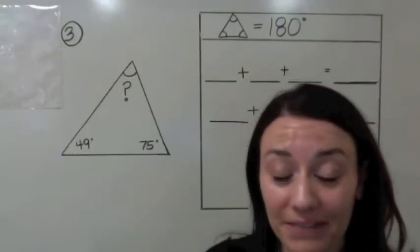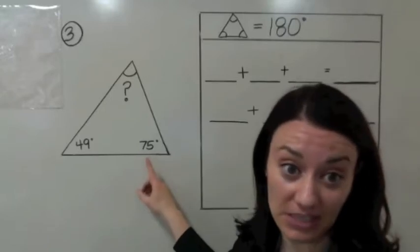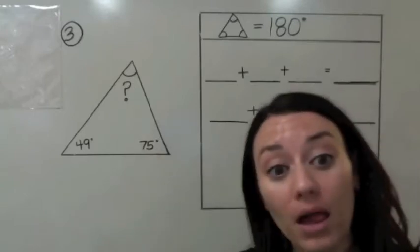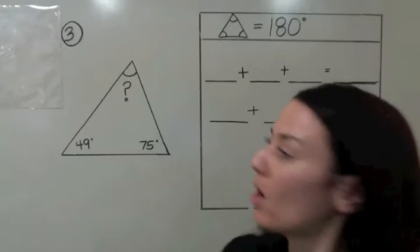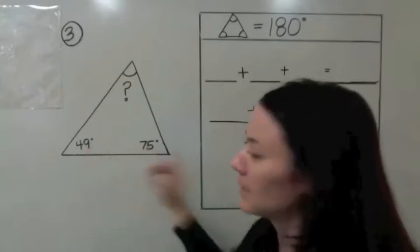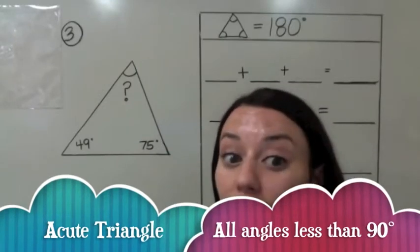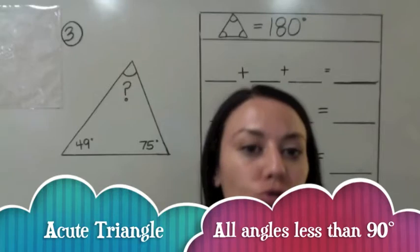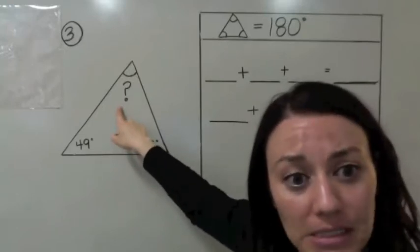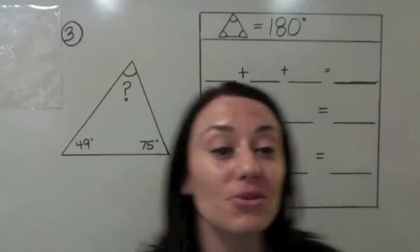Let's look at triangle number three. You're given two of the angles: 75 degrees and 49 degrees, and you're asked to find the missing angle. Let's classify this so we can predict what the third angle could be. When we're talking about 49 and 75 degrees, those are acute angles — all less than 90. An acute triangle means every angle is less than 90. So this missing angle should be less than 90 degrees. We prove it using the Triangle Sum Theorem, which tells us the three angles in a triangle equal 180 degrees.